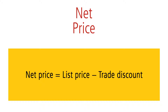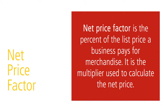The net price is the amount a business actually pays for the merchandise after the discount has been deducted. It may be calculated by subtracting the amount of the trade discount from the list price, so net price equals list price minus trade discount. Frequently, merchants are more interested in knowing the net price of an item than the amount of the trade discount. In that case, the net price can be calculated directly from the list price without first finding the amount of the discount.